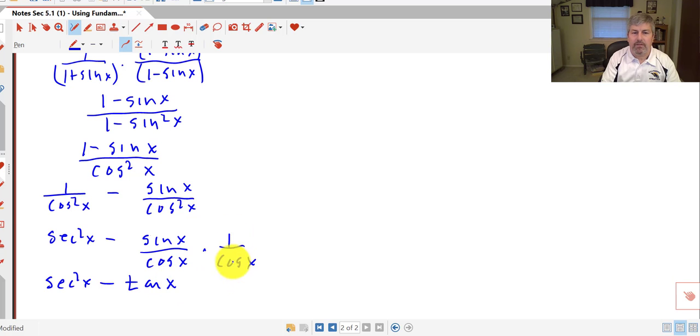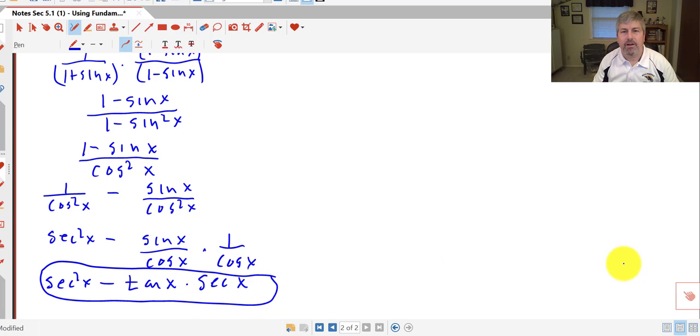So we get tangent of x, and 1 over cosine of x is secant x. And we don't want to factor the secant out. We want to leave it all multiplied together. And now we have rewritten that original question without any fractions. And we'll get more practice on these when I see you in class.